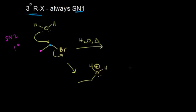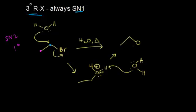Another water molecule comes along and this time functions as a base — it needs to remove that +1 formal charge on the oxygen. The lone pair of electrons takes that proton, and those electrons kick in on the oxygen. We end up with ethanol as our product, with two lone pairs of electrons on the oxygen and a hydrogen. There are no chirality centers created, so ethanol is the only product for this reaction.